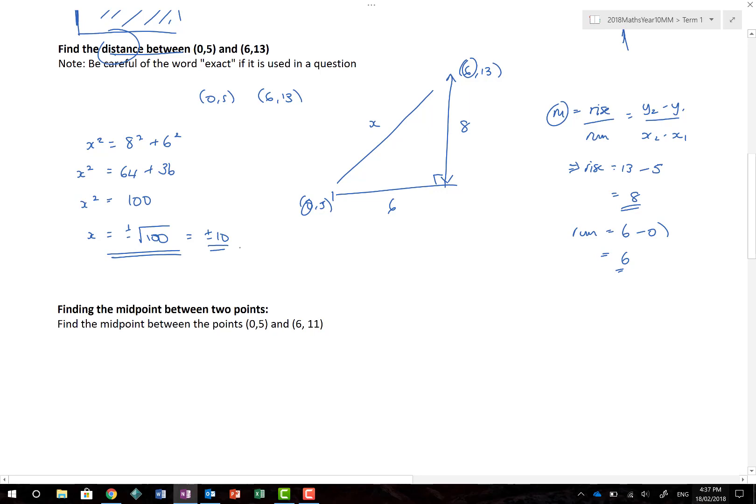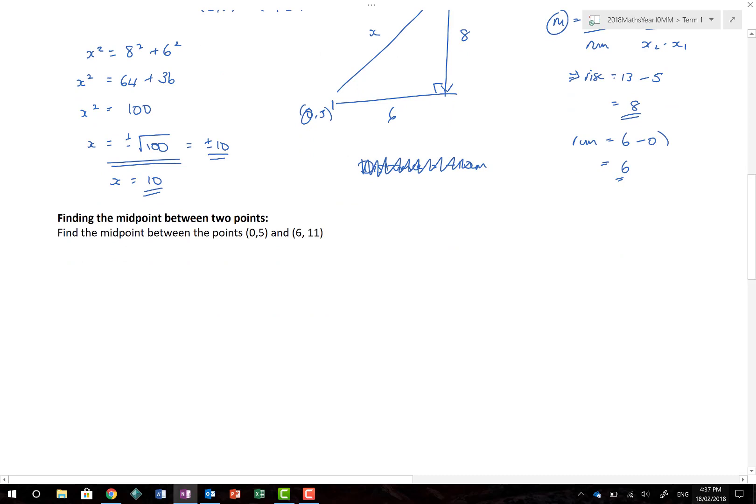Now, when we're looking for distance, let's just think about that. Is there any such thing as a distance of minus 10 anything? What a distance of minus 10 metres would be. I can't even visualise what a negative distance would be. So, actually, in this situation, we can ignore the negative value and say that an x in this situation is going to be 10. So, the distance between 0, 5 and 6, 13 is given by 10. Whoa! Awesome!